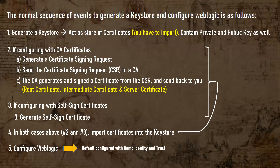By default, WebLogic is configured with demo identity and trust. The certificates received from certificate authorities — or a self-signed certificate you generate — must be imported into your keystore. Once imported, that keystore acts as your identity and trust keystore, whether demo or custom. When you configure WebLogic with CA certificates or self-signed certificates, you have to change from demo identity and trust to custom identity and custom trust, because you are customizing your environment with your own certificates.